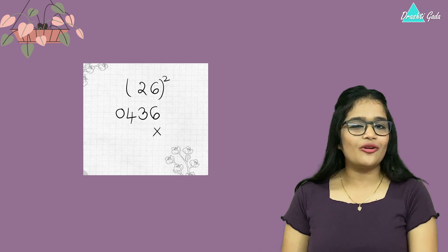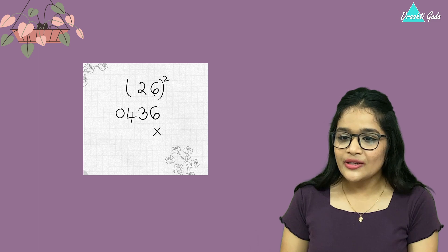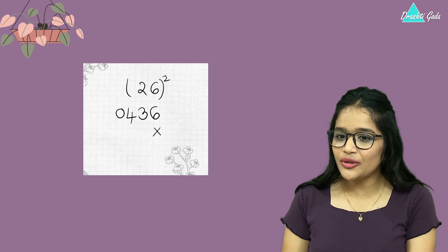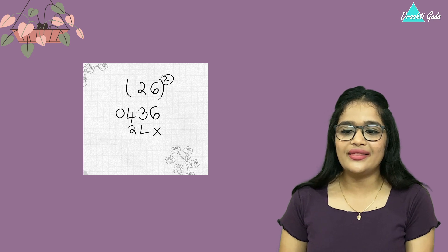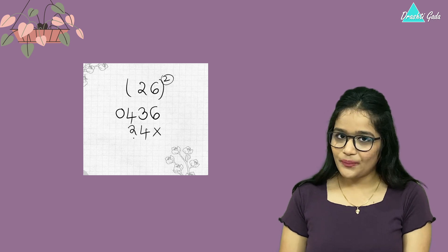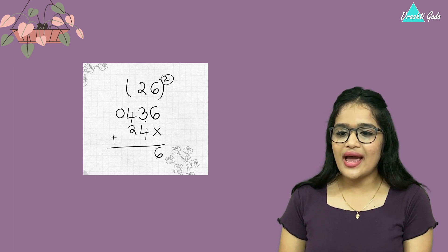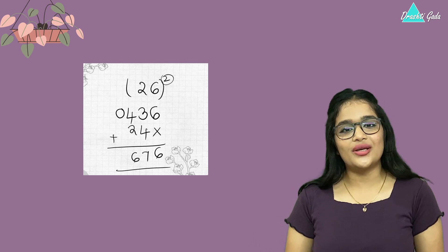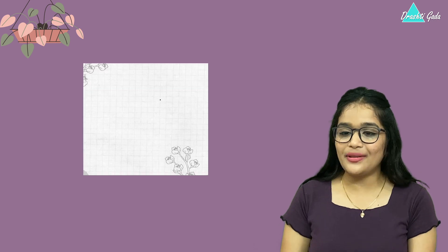Step two: first, cross the units place. Then multiply the digits: two times six is 12. Then multiply by two: 12 into 2 gives 24. So we write 24 here. Then we add everything together — we get 6 and 7 and 6. So 26 squared gives us 676.